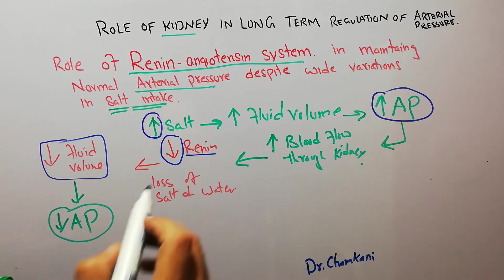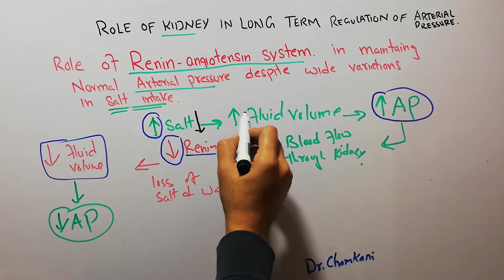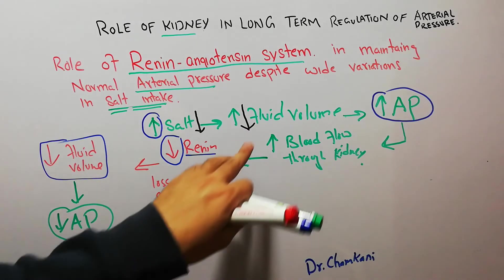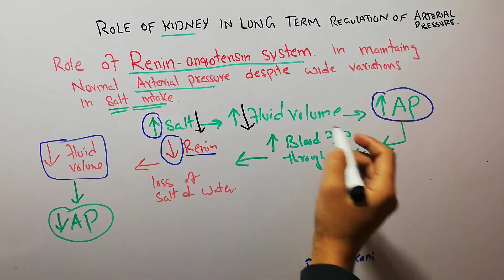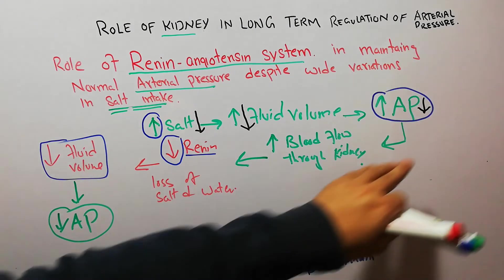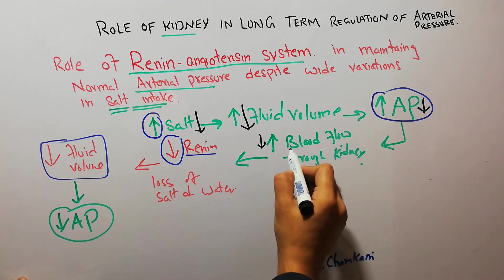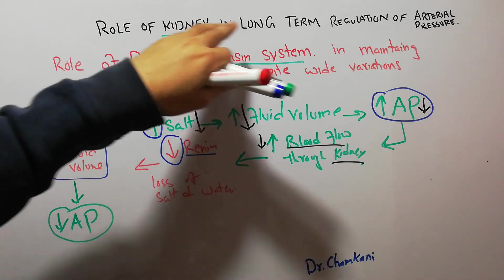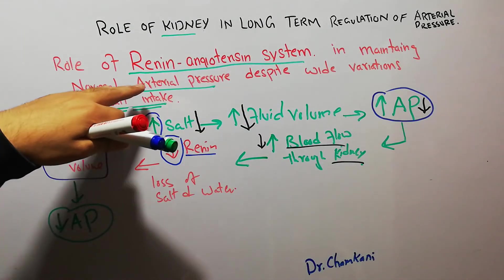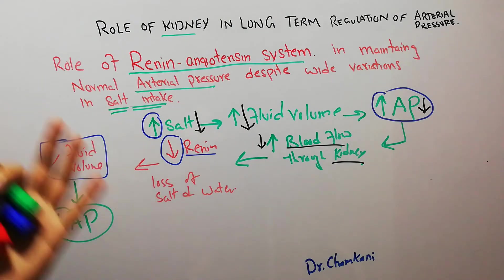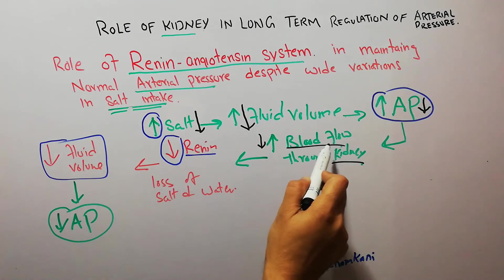Now if the salt intake decreases, it will lead to decreased extracellular fluid retention, because of the decreased intake of salt. This will lead to decreased arterial pressure, and decreased arterial pressure will lead to decreased blood flow through the kidney. So here comes the role of the kidney once again in the maintenance of arterial pressure, and here comes the role of the renin angiotensin system once again in maintaining normal arterial pressure despite changes in the intake of salt.